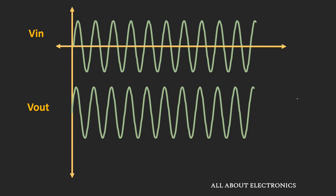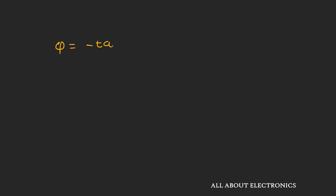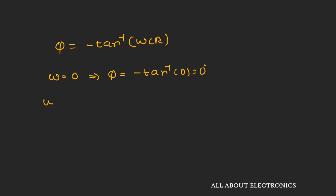In the case of a low-pass filter, as we increase the input frequency, not only does the output amplitude reduce, but the phase also changes. This phase φ can be given as −tan⁻¹(ωCR). At ω = 0, the phase is −tan⁻¹(0), which is 0 degrees — so the output is in phase with the input. At the cutoff frequency, where ω = 1/RC, the phase is −tan⁻¹(1), giving −45 degrees.